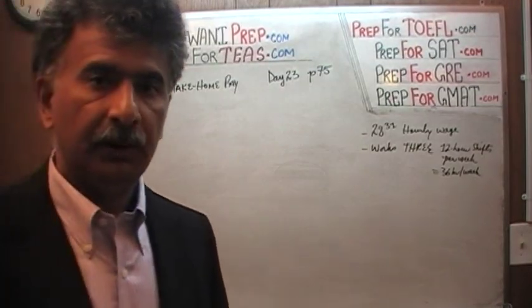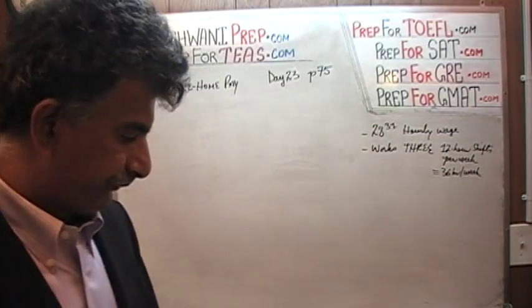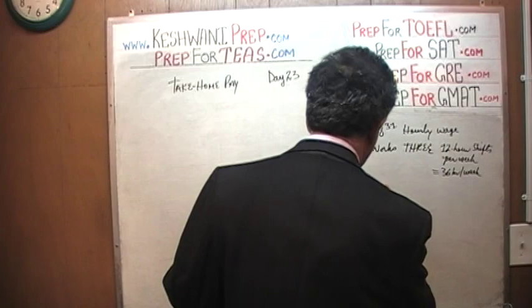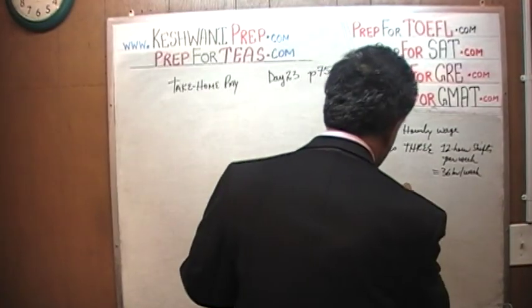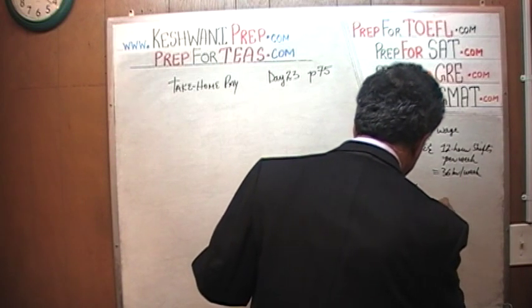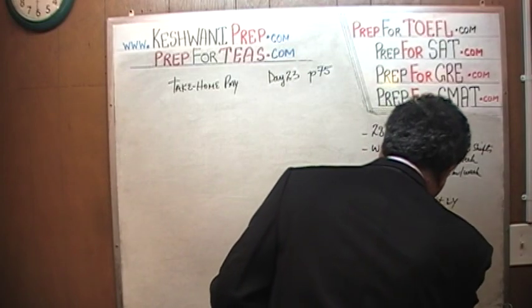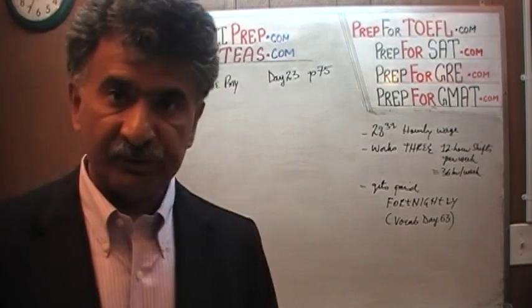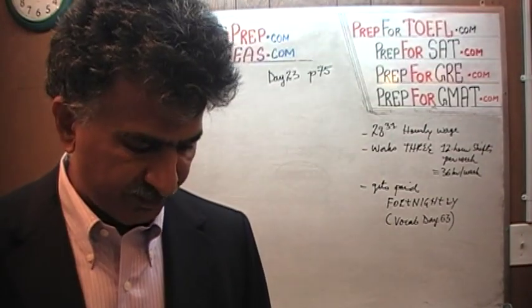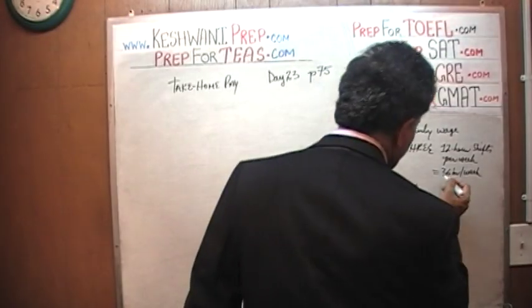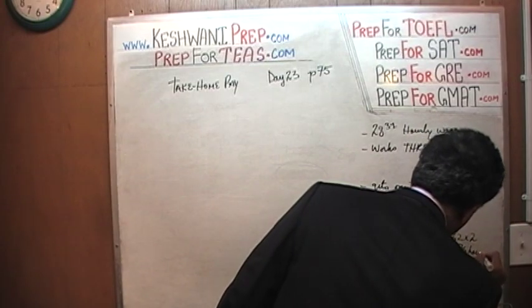We have to always be attentive to make sure about the pay period. If it's two weeks, we will have to multiply the 36 hours by 2 if the person is getting paid fortnightly — every other week. And it turns out she is getting paid fortnightly, every other week. Fortnightly is the word we learned on day 63 of our vocabulary video — just type in Keshwani, vocabulary words, day 63. So she gets paid every other week, meaning the total number of hours is 36 times 2, which is 72 hours per paycheck.